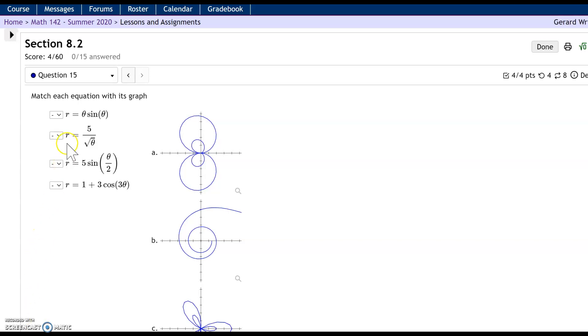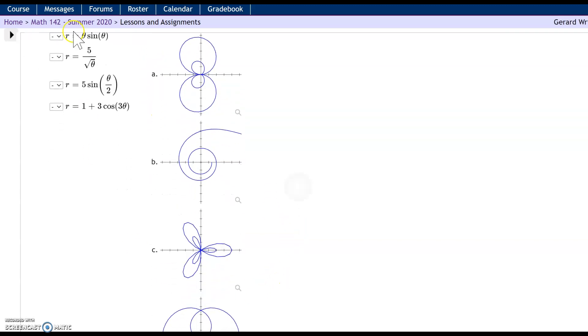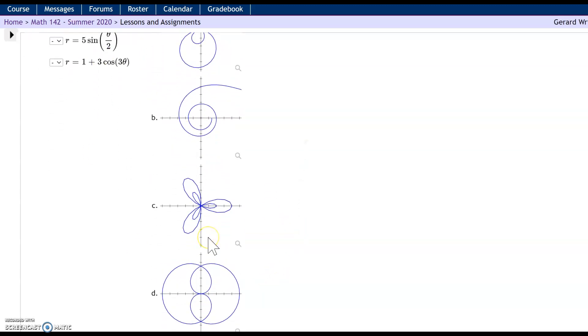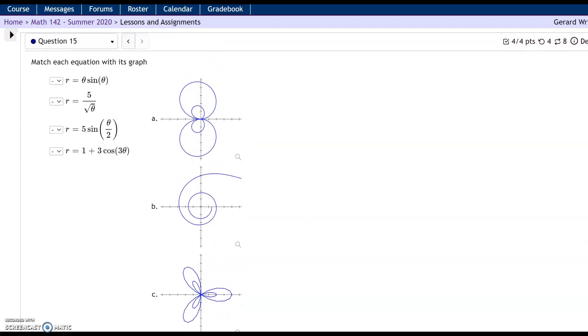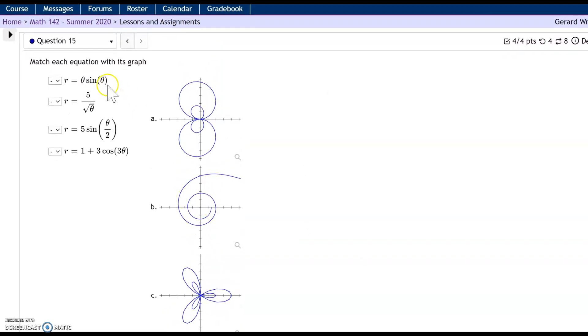Hi, I want to do an example of matching polar equations to graphs. We have four different equations and four different graphs. To do this, you don't have to be an expert at graphing these. Just get a rough idea of what the graph looks like so you can match them up.